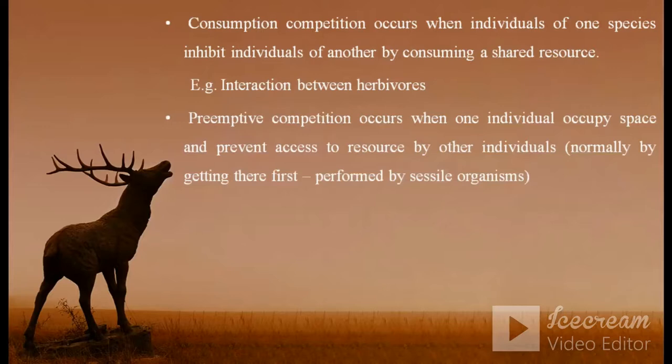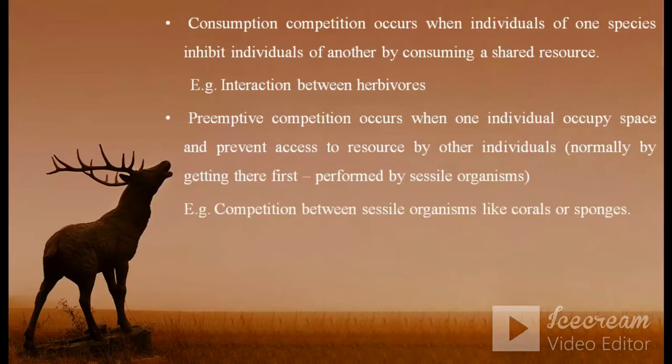Preemption competition occurs when one individual occupies space and prevents access to resources by other individuals. Normally, this kind of competition is performed by sessile organisms like sponges or corals. They first inhabit a particular land, occupy that area for their growth, and inhibit any other species or organism from invading that particular area.